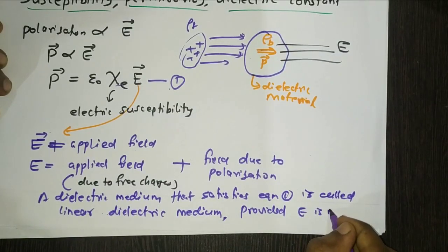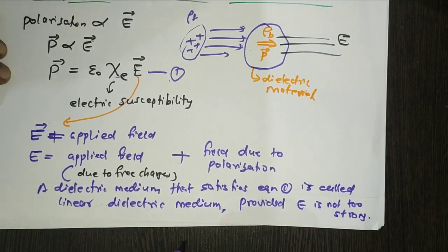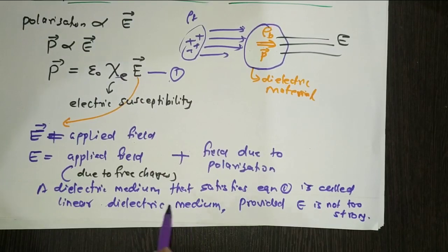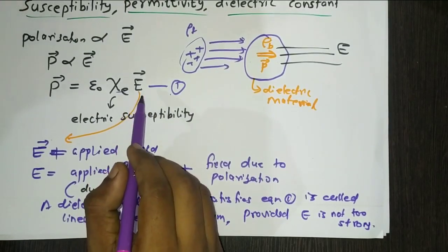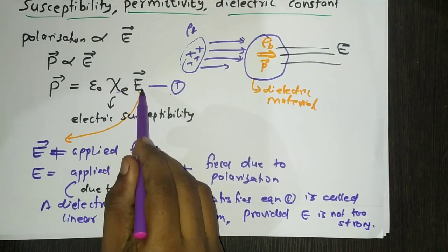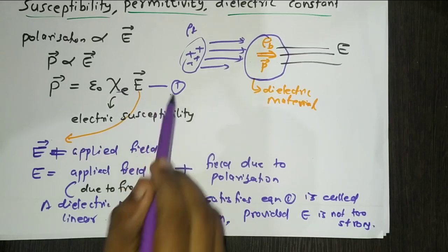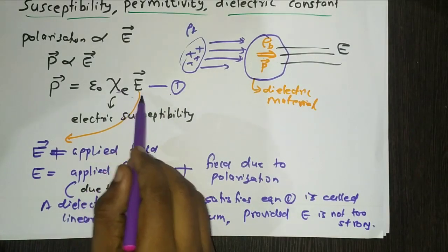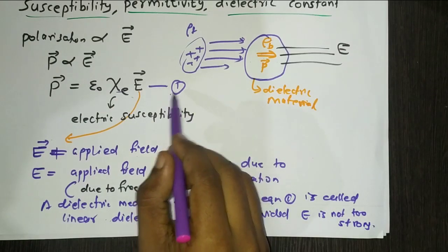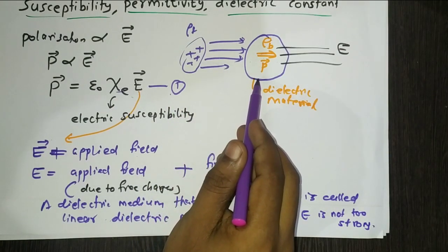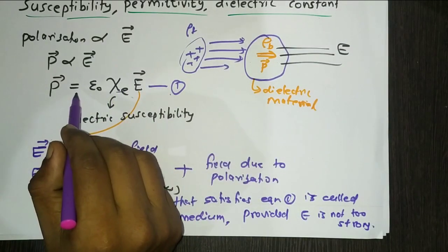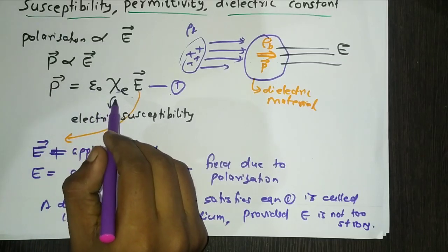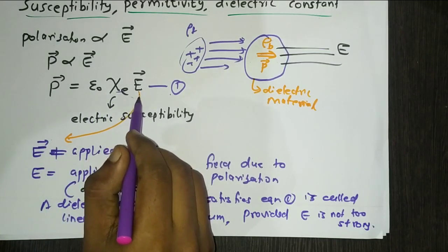This linear relation holds provided E is not too strong. If the electric field is stronger, then other terms like E², E³, etc., will come into the picture, and the case becomes that of nonlinear dielectrics. If we put a piece of dielectric into an external electric field, we cannot compute the polarization P directly from this relation.